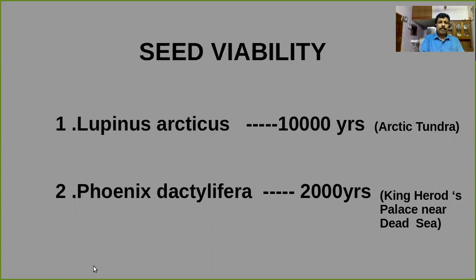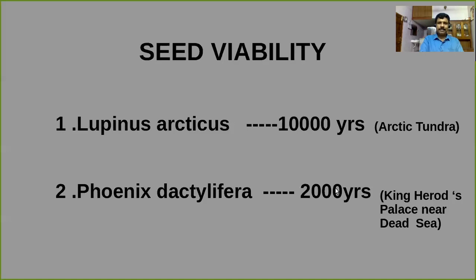A second example is a type of date palm — Phoenix dactylifera. It was discovered during archaeological excavation at King Herod's Palace near the Dead Sea. The seeds can maintain viability for 2,000 years, meaning after 2,000 years the seed can germinate and produce new plants. This is something about seed viability.